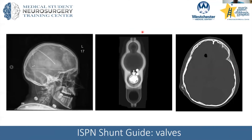Here are some examples of shunt valves. There are numerous different types. On a lateral skull X-ray you can usually get a good look at the markings — the catheter going into the ventricle, the valve, and then tunneling down to the abdomen or another body site. Axial CT on bone windows can also be very helpful to trace the valve and tubing. The International Society for Pediatric Neurosurgery has a website called the Shunt Guide, which covers all commonly used valves on the market, their radiographic appearance, and different pressure settings — a great resource to save for when you're an intern sorting out which valve a patient has.